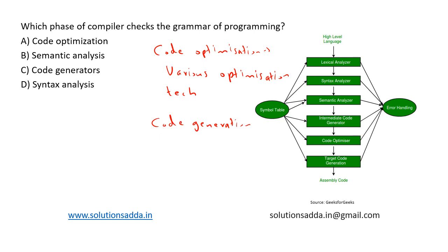Finally, code generation: this phase takes the optimized intermediate code and generates the actual machine code that can be executed in the hardware. Based on this understanding, we can say that the syntax analysis phase of the compiler checks the grammar of the programming language, so option D is the correct answer.